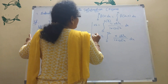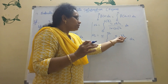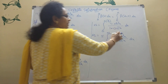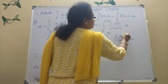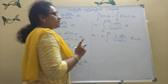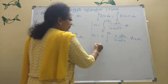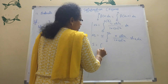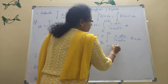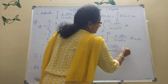Now write sin³x as sin²x · sin x. Then convert sin²x using the identity: sin²x = 1 − cos²x. So I = π × integration of 0 to π/2 of [(1 − cos²x) / (1 + cos²x)] · sin x dx.